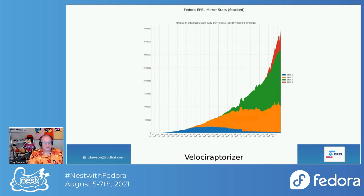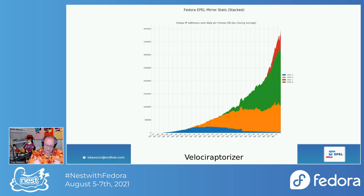First things first: total numbers. As Matt said on Thursday, there are two different styles of number gathering. The first is unique IP addresses getting updates each day. If we stack them all together — all the releases together — it looks like we're getting pretty close to 40 million EPEL users. That's really cool and impressive.